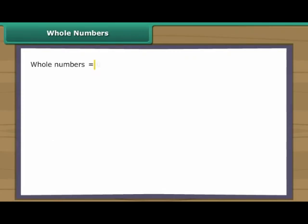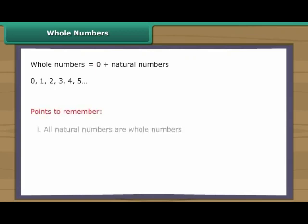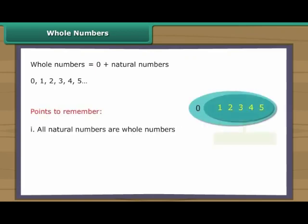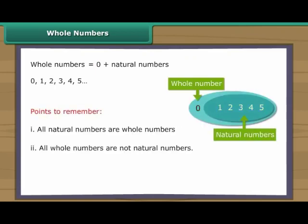Whole numbers include zero and all the natural numbers. Points to remember: One, all natural numbers are whole numbers. Two, all whole numbers are not natural numbers. Three, there is no largest whole number.